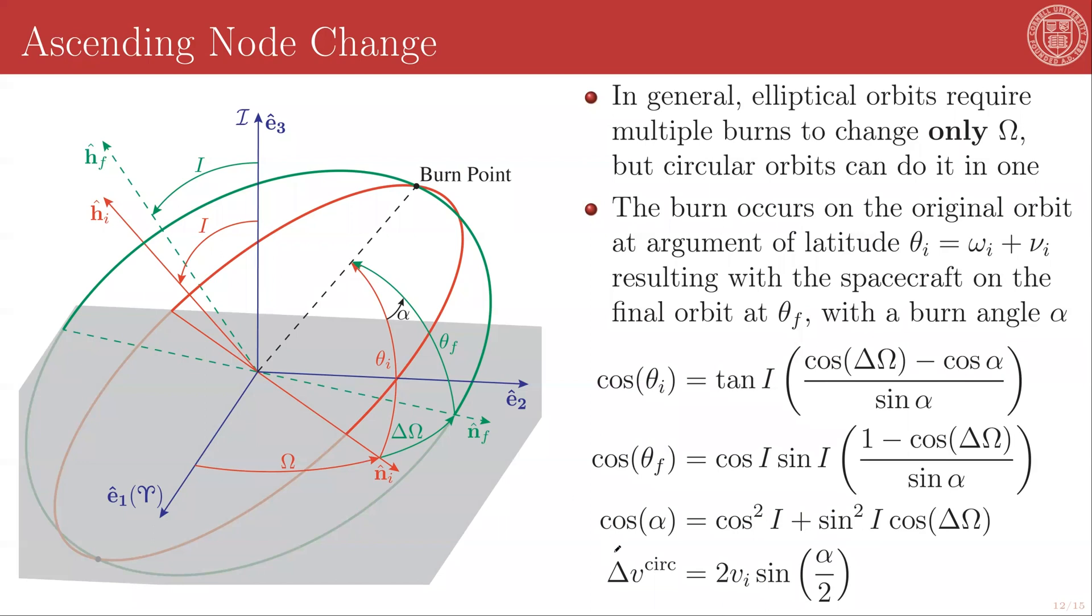And for a circular orbit, the required delta V to create this pure ascending node change is going to be equal to twice the initial orbital velocity times the sine of half this burn angle alpha. So again, we have this proportionality between the required delta V and the initial orbital velocity.